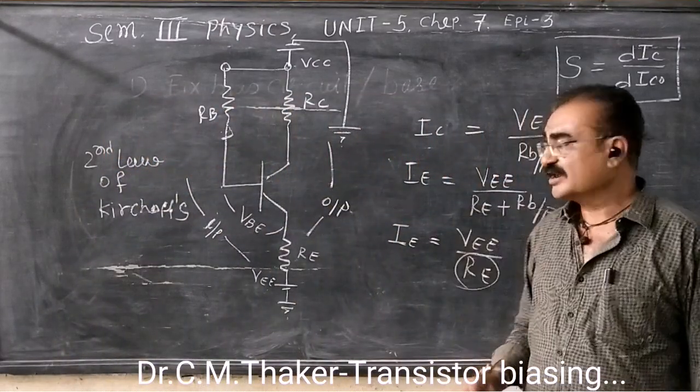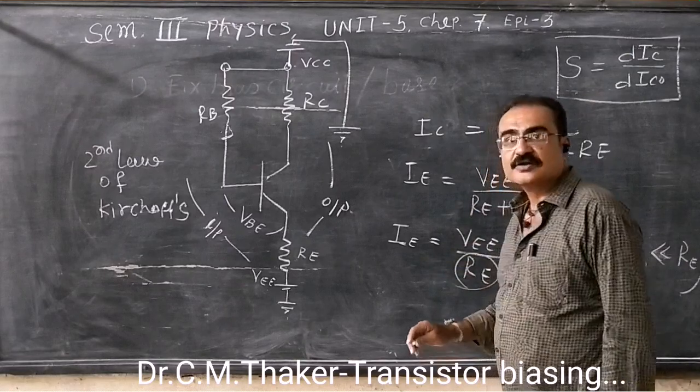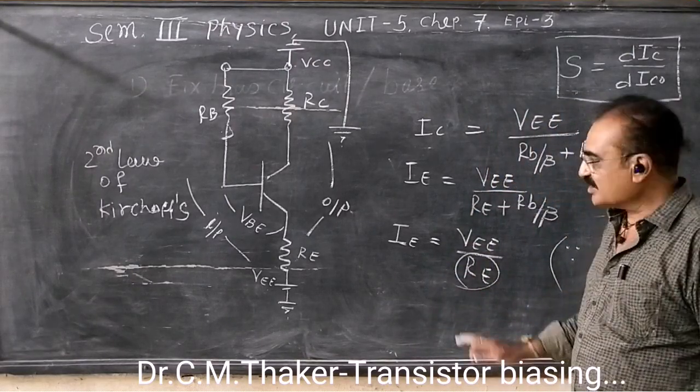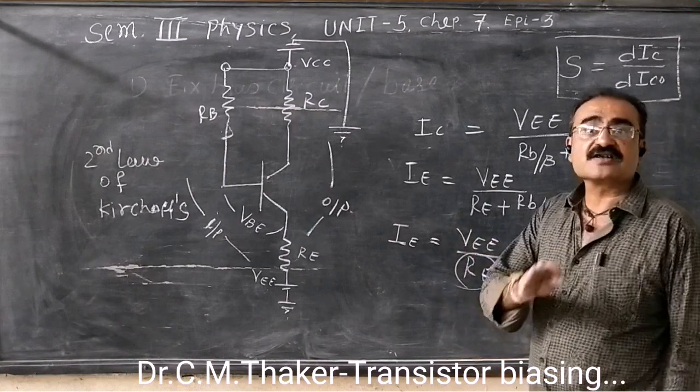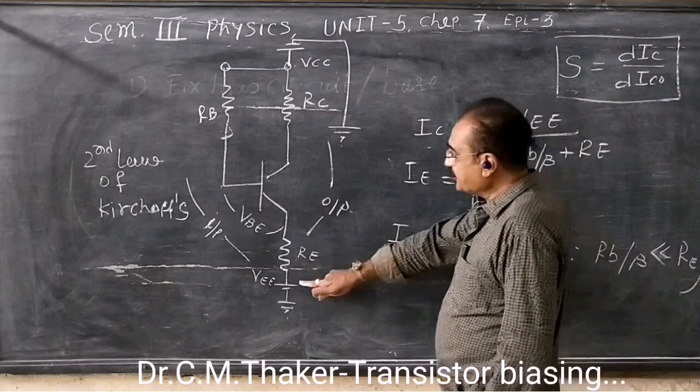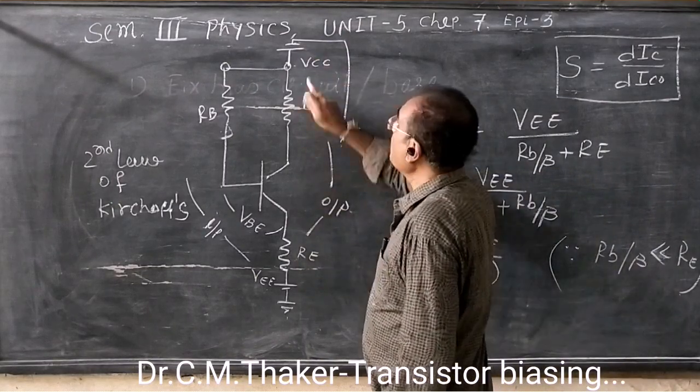So the whole circuit has become independent of the beta of the transistor. That is why it is stable against thermal runaway. But it is not viable that you have to connect two power supplies.